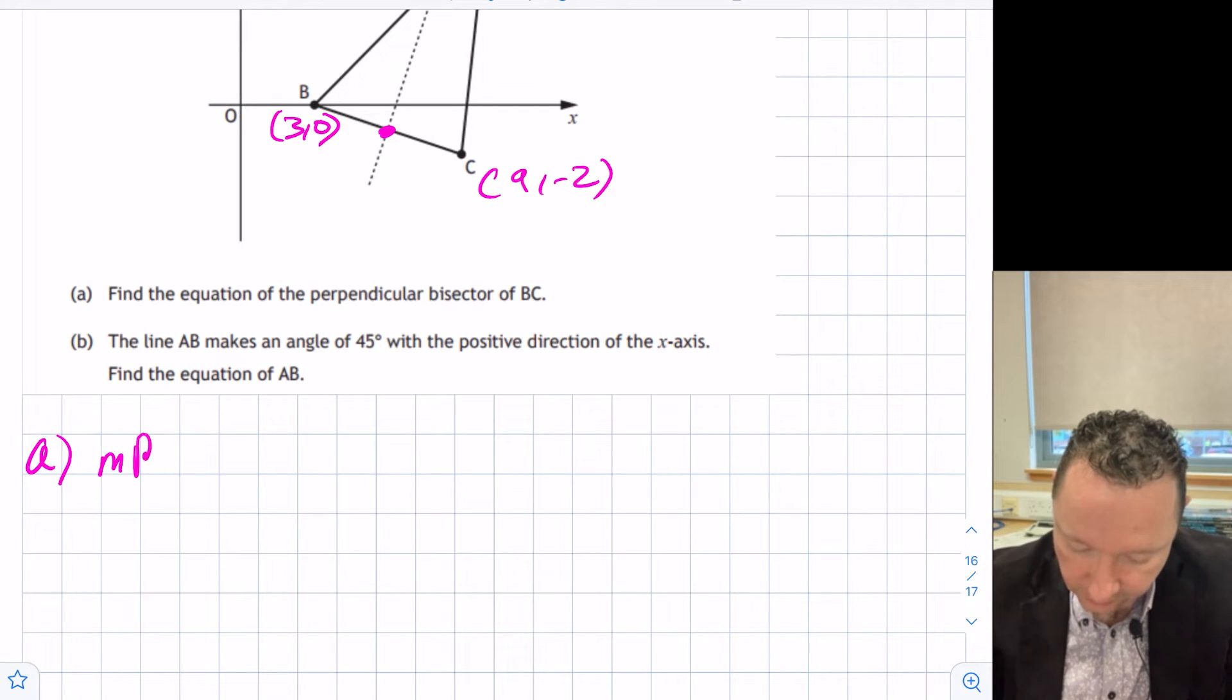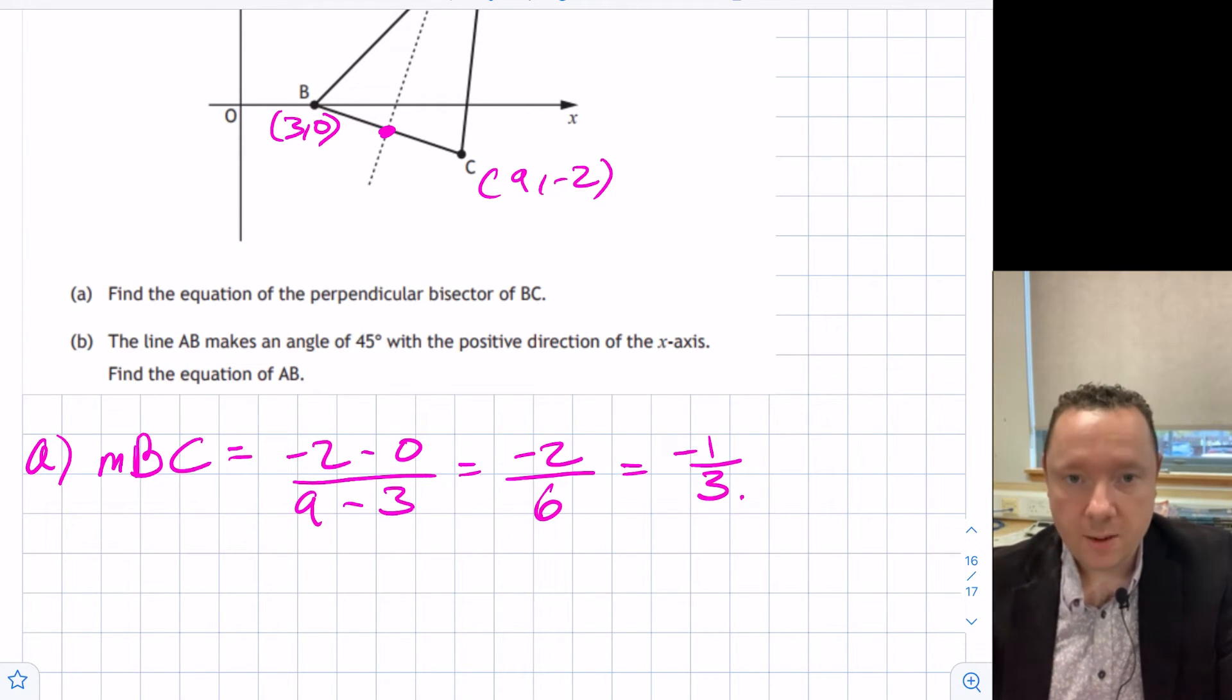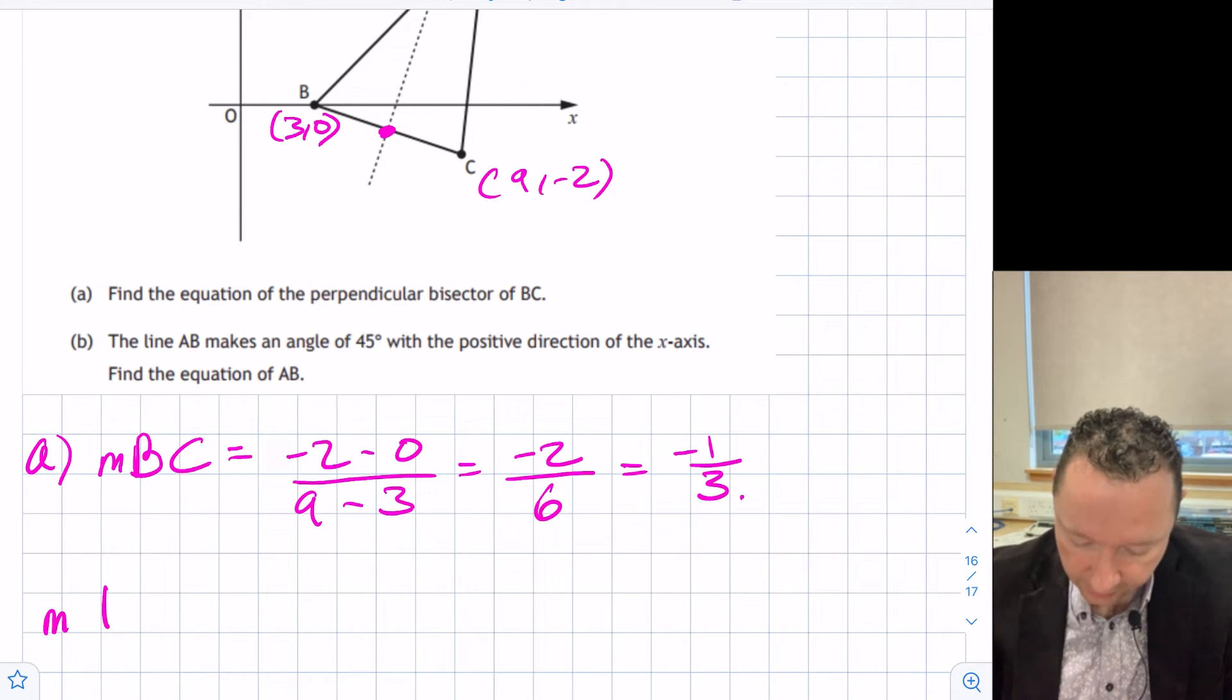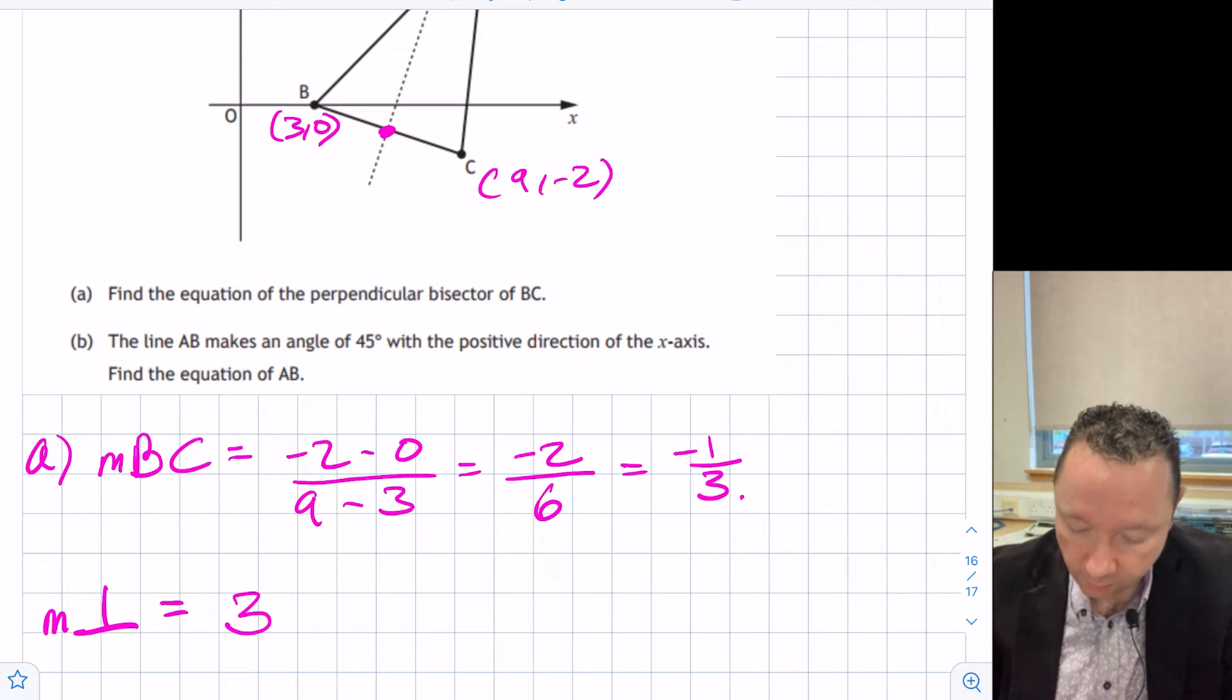The gradient of BC is equal to minus 2 take away 0 over 9 minus 3, minus 2 over 6, which is negative a third. So then we can immediately say that the gradient of the perpendicular equals the negative reciprocal. So I take the 3 up and then put a minus in front, but it's already got a minus, so it's just 3. And we need to say since m1 times m2 equals minus 1.